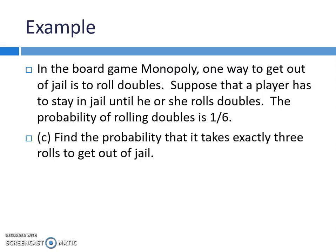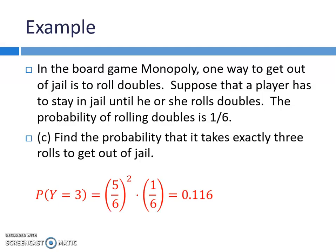Let's calculate a probability. Find the probability that it takes exactly three rolls to get out of jail — so what's P(Y = 3)? The first roll you didn't get it: that's 5/6. Second roll you didn't get it: that's 5/6. So it's (5/6) squared times 1/6, which equals approximately 0.116. This is what I mean about the formula being intuitive — even though it's not on the formula sheet, it makes a lot of sense.